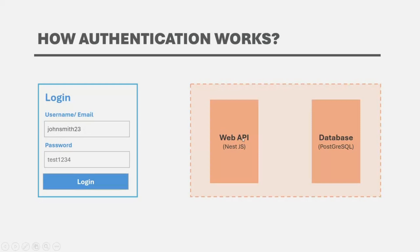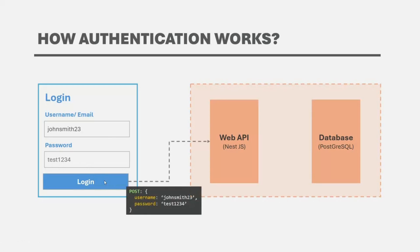If the user with that username does not exist in the database, the web API will immediately send a response saying that user does not exist. But if the username exists in the database, the web API also needs to verify that the user trying to log in is actually that user, and that is done using a password. This can also be done using other methods like a one-time code sent to your phone or email, biometric data, or security certificates.